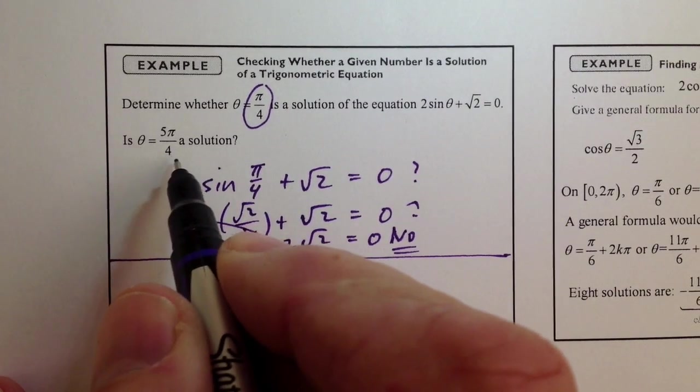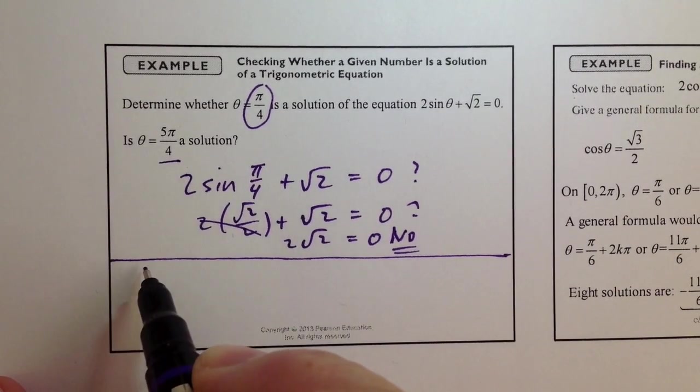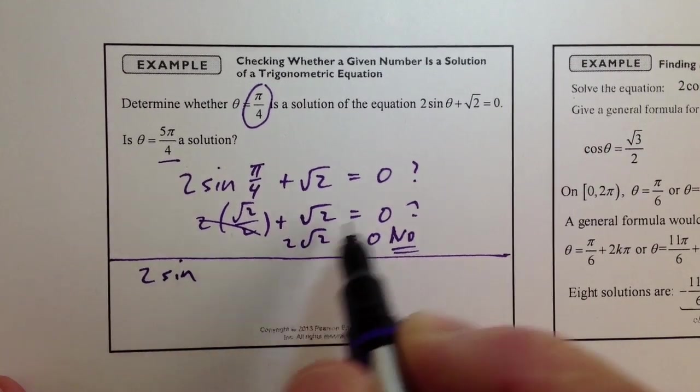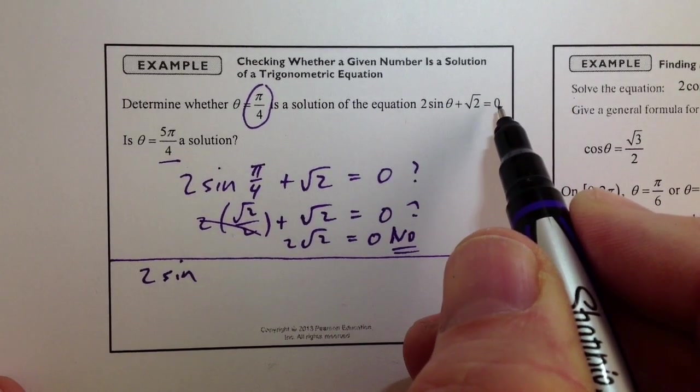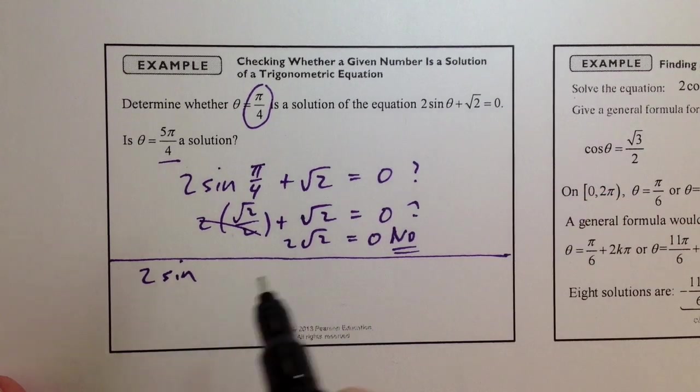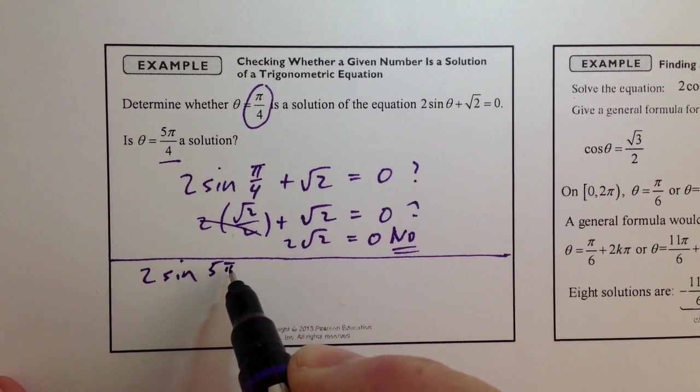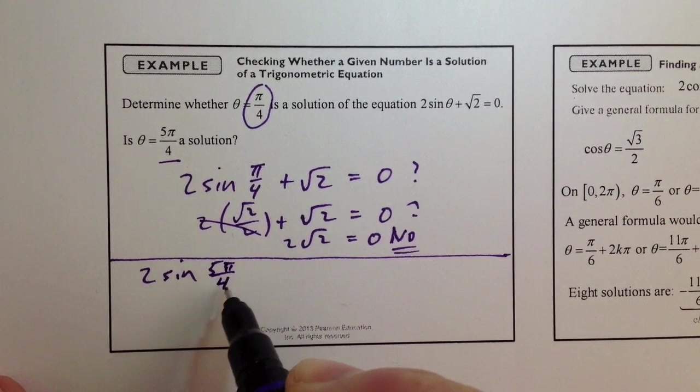If we replace, though, theta with 5 pi over 4, then we do the same thing. We replace the theta in this given equation. It has to be the initial equation, or the original equation. And when we replace theta with 5 pi over 4,